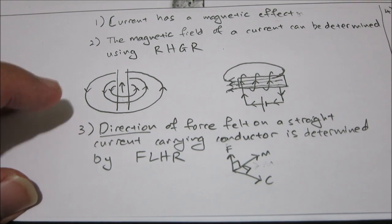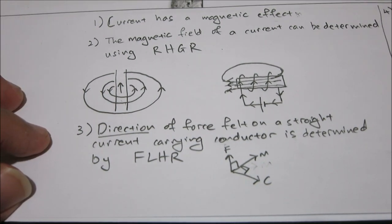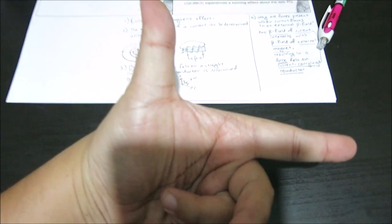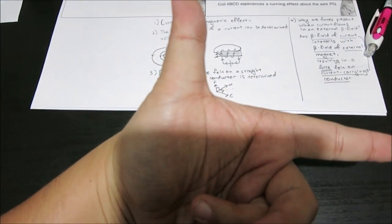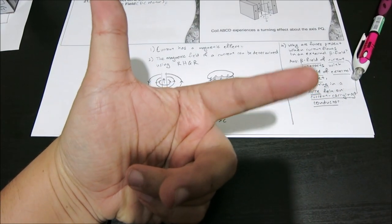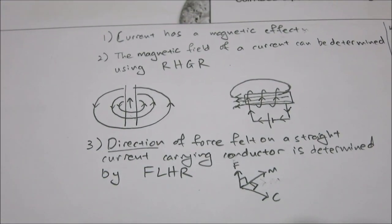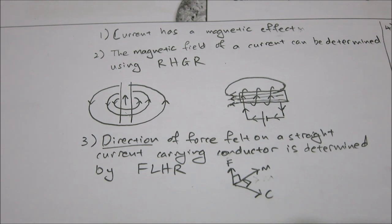Another thing we learned in the first video was the direction of force, which can be determined using Fleming's left hand rule. You use your left hand in the shape of a gun, with your middle finger sticking out 90 degrees. Remember it by father, mother, and child — force, magnetic field, and current. So if you have a wire existing in an external magnetic field provided by a magnet, the current and magnet interact to produce a motion on the wire.